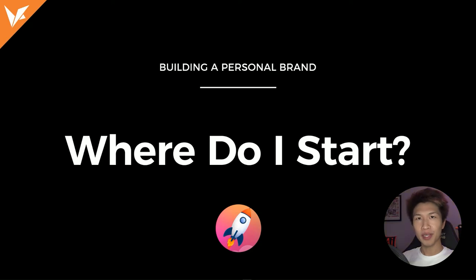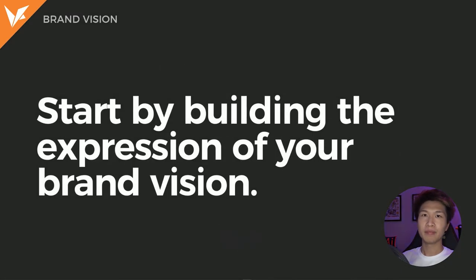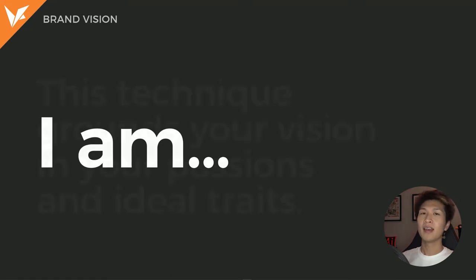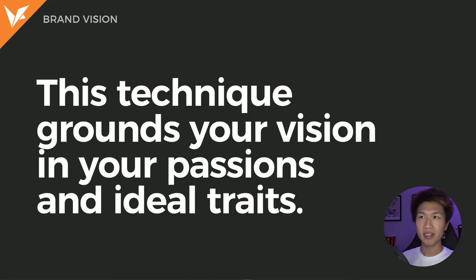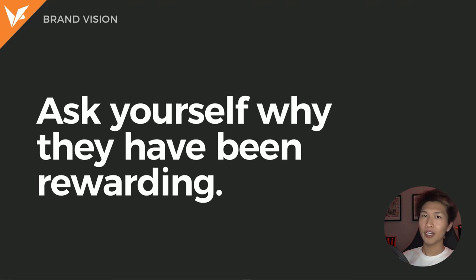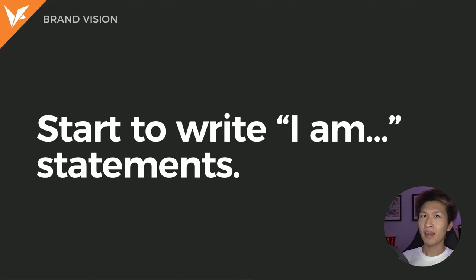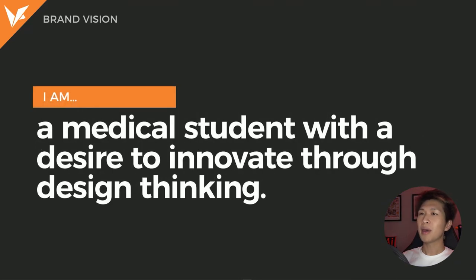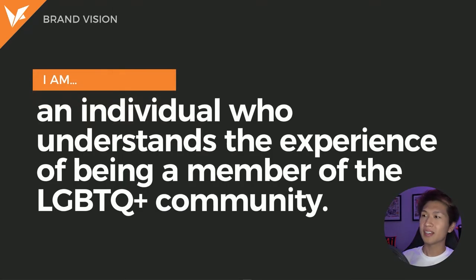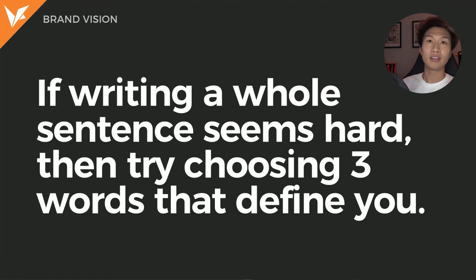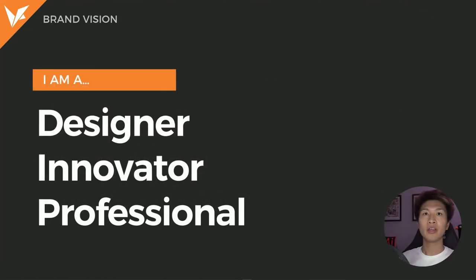So you might be wondering where do I start building my brand? The first step is to figure out your brand vision and how you want to express that. This can be accomplished by thinking in terms of I am statements. This technique grounds your vision in your passions and your ideal traits. It helps you determine the parts of your life and career that have been most rewarding and why. As you start to write your I am statements, they should capture who you are and what matters to you. For example: I am a medical student with a desire to innovate through design thinking. Or: I am a designer, an innovator, and a professional.